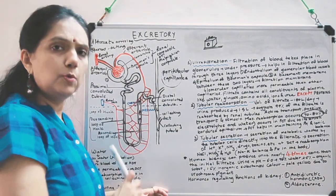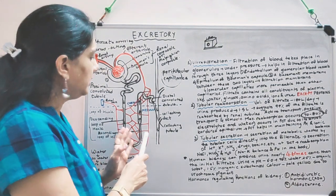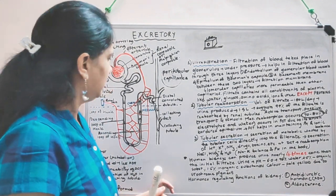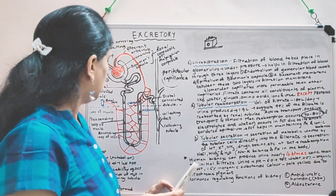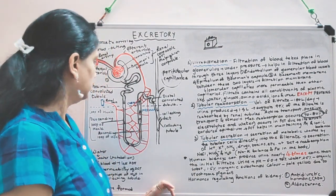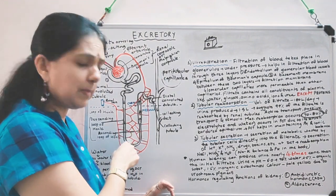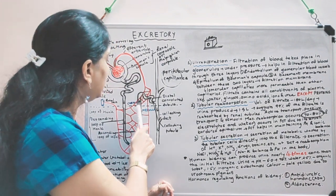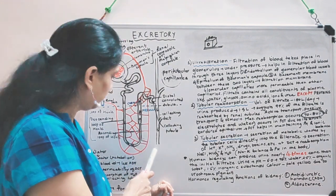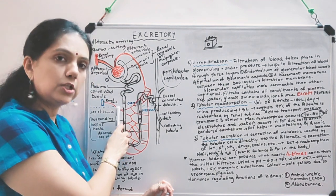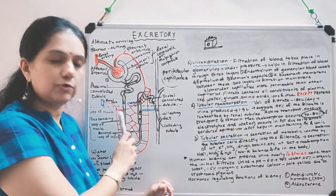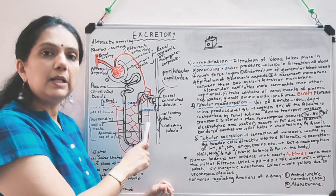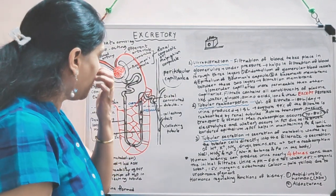Reabsorption is very less in the loop of Henle, but the osmolarity of the interstitial fluid is maintained. The descending limb has a thin segment that is permeable to water — so water goes out — but no electrolytes are allowed out. The ascending limb is not permeable to water; only electrolytes move out. This maintains the concentration gradient.